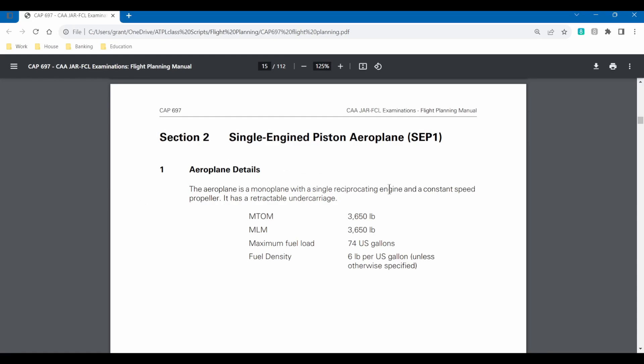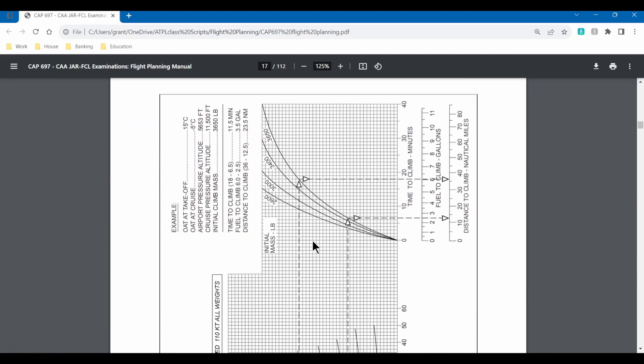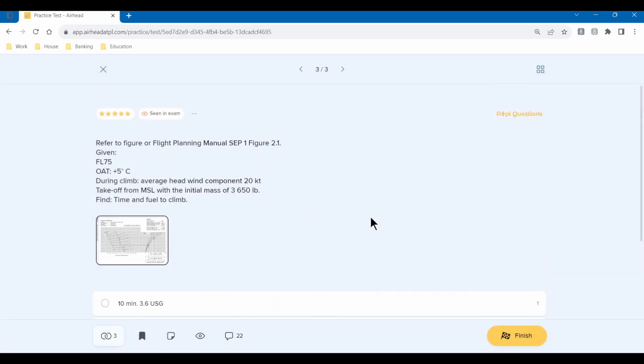Today we are basically just going to have a look at some of the graphs that are in the CAP 697 document and do a few examples so we can see how the graphs work. We're going to start off with the SEP aircraft which has these basic characteristics. Then we have a few graphs for the climb phase, cruise phase, and details on range and endurance.